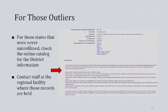For states like Ohio, Wisconsin, and Massachusetts that were never microfilmed and therefore never digitized, we do not have descriptive pamphlets. If we strive to make records as user-friendly as possible, you may be able to find that information in our online catalog. If that is not available, staff at the regional facility where those records are held should be able to help you figure out where to begin looking.